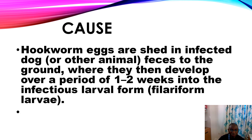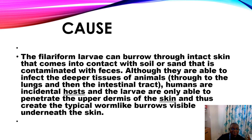The cause is when eggs are shed in infected dog or other animal feces to the ground, where they then develop over a period of one to two weeks into the infectious larval form — filariform larvae. Filariform larvae can burrow through intact skin that comes into contact with soil or sand contaminated with feces. Although they are able to infect the deeper tissues of animals through the lungs and then the intestinal tract, humans are incidental hosts and the larvae are only able to penetrate the epidermis of the skin, creating the typical worm-like burrows visible under the skin.